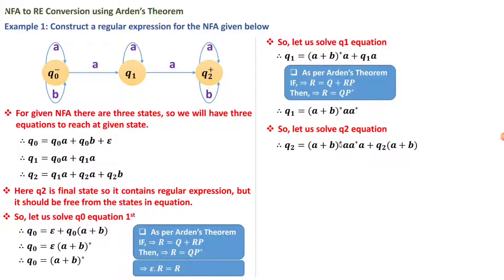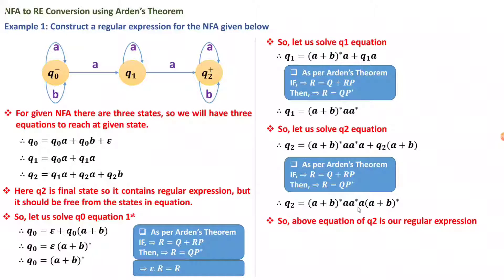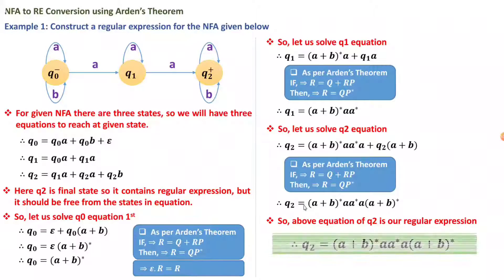Substituting q1 into q2: q2 = q1·a + q2·a + q2·b = q1·a + q2·(a+b). Applying Arden's theorem with Q = q1·a = (a+b)*·a·a*·a and P = (a+b), we get q2 = (a+b)*·a·a*·a·(a+b)*. This is the final regular expression for the given non-deterministic finite automaton.